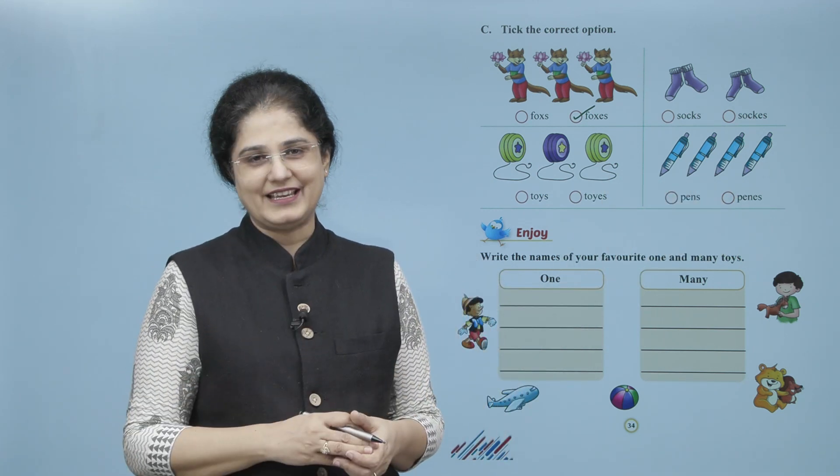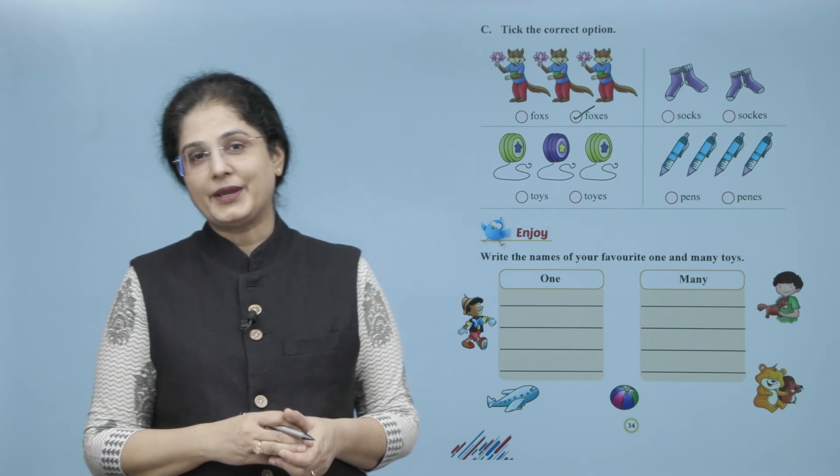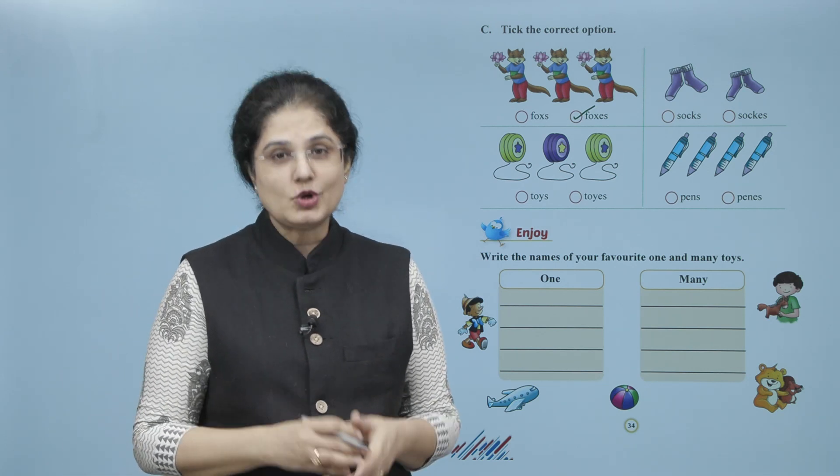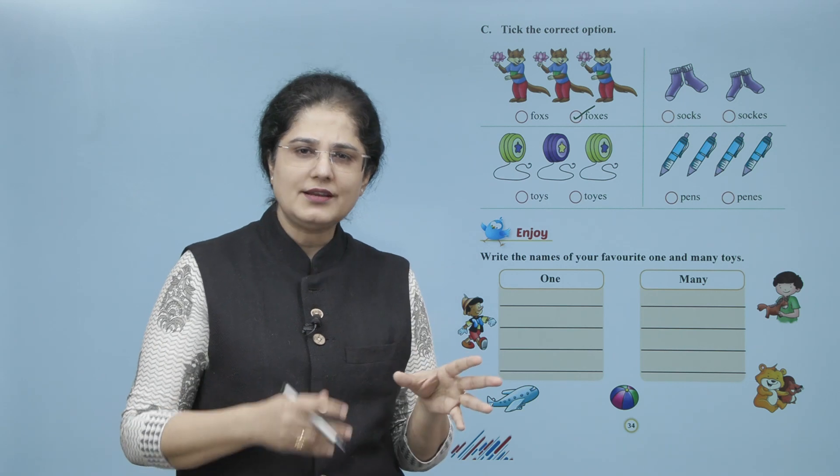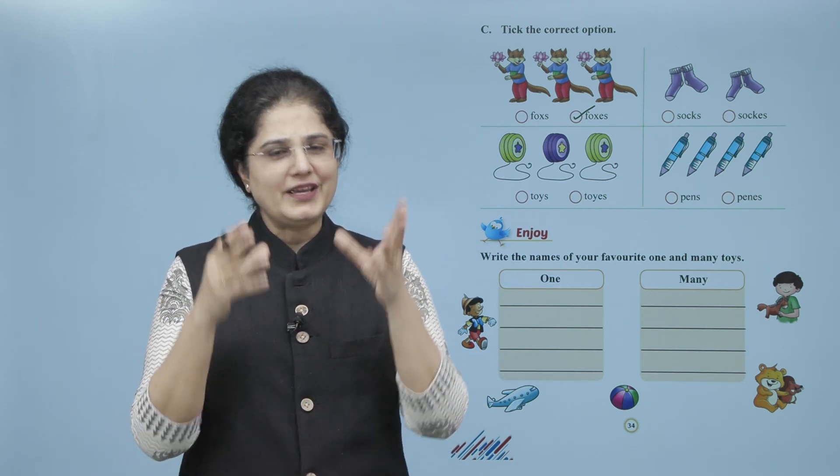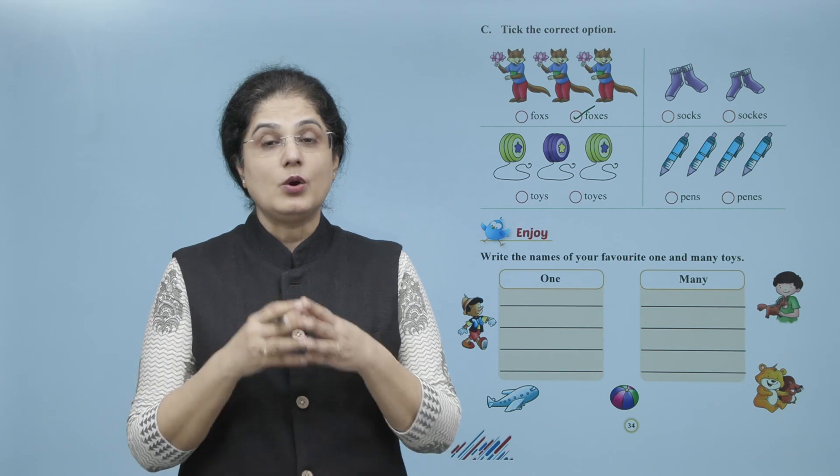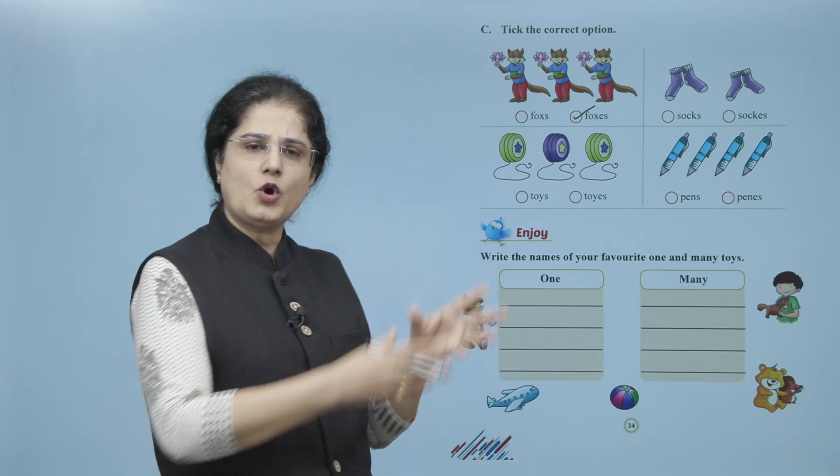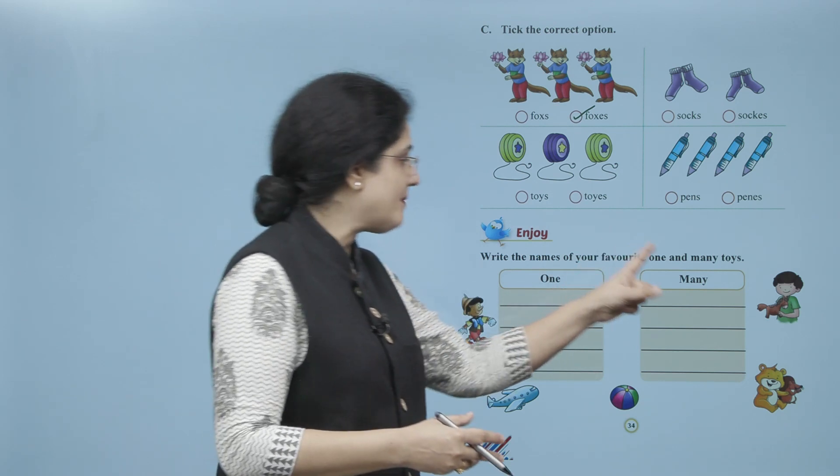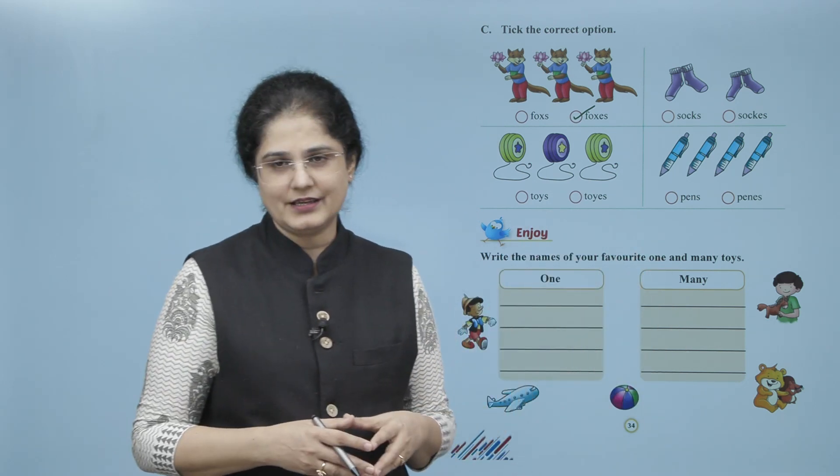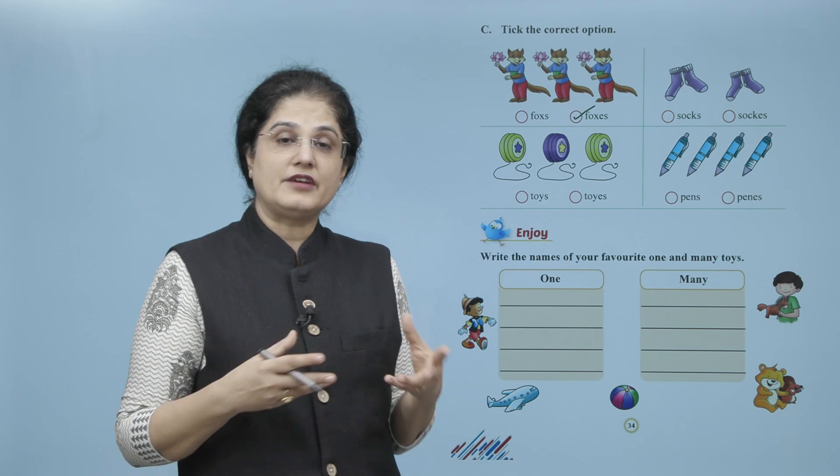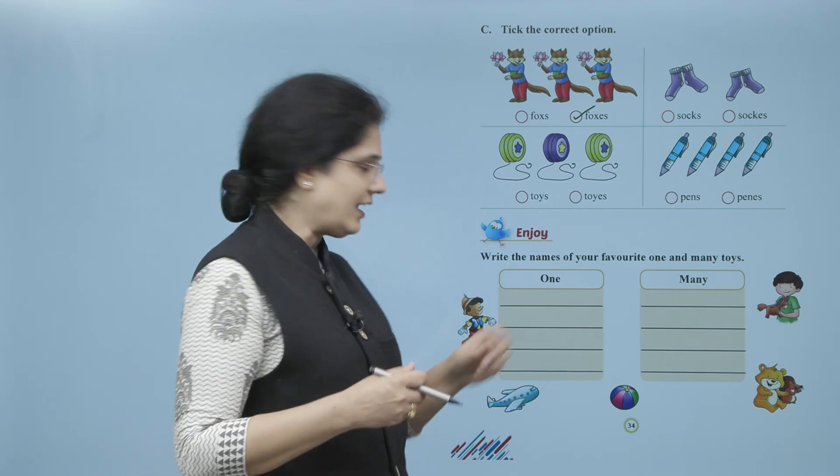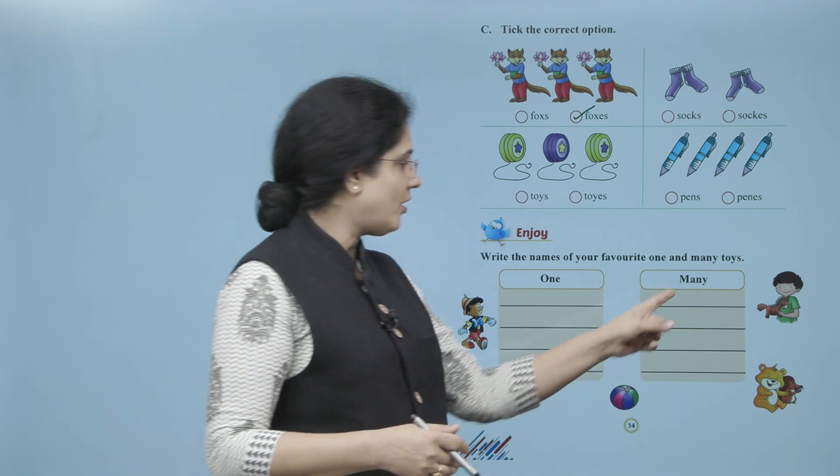Now let us enjoy. Write the names of your favorite one and many toys. To jo bhi aapke favorite toys hain, un toys mein one ke name yahaan pe likhenge aur unhi toys ke many ke name yahaan likhenge. For example, aapka favorite toy ball hai, to yahaan pe aap ball likhenge aur many ke niche balls likhenge.